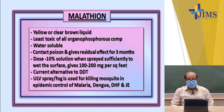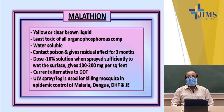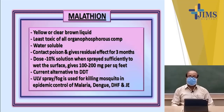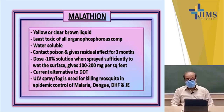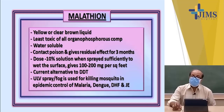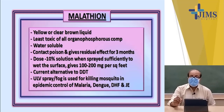The dose of malathion is a 10% solution spread sufficiently to wet the surface, giving around 100 to 200 milligrams per square foot. It is the current alternative to DDT. It can be used as an ultra-low-volume (ULV) spray or fog to help kill or eliminate mosquitoes in epidemic control of malaria, dengue, dengue hemorrhagic fever, and Japanese encephalitis. Malathion is at present the most important insecticide chemical available to kill currently prevalent vectors in the country.